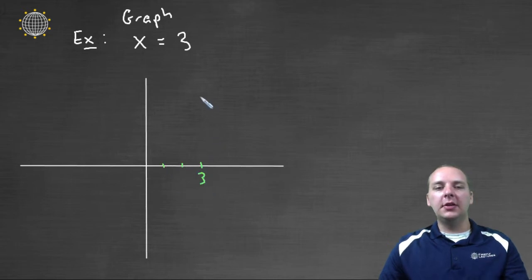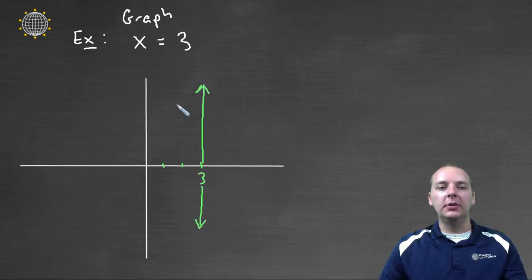then that's going to be a vertical line, because the x coordinate is always three. So this would be a vertical line, and this would be a graph.